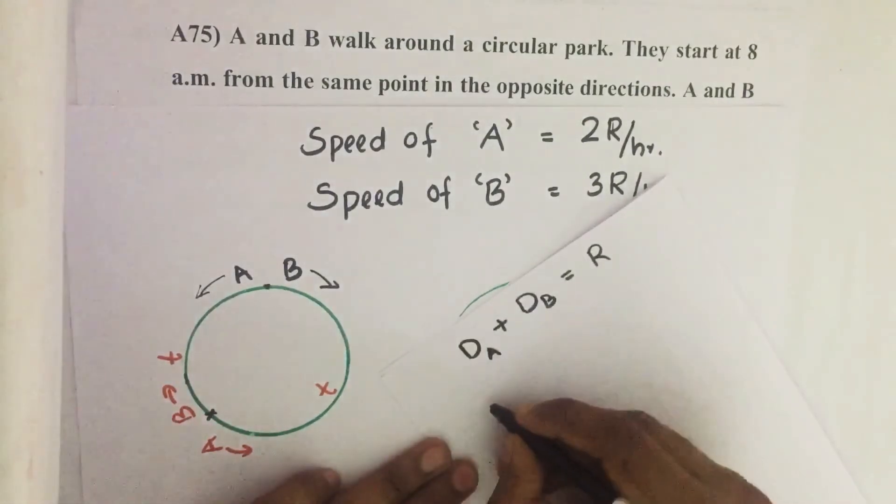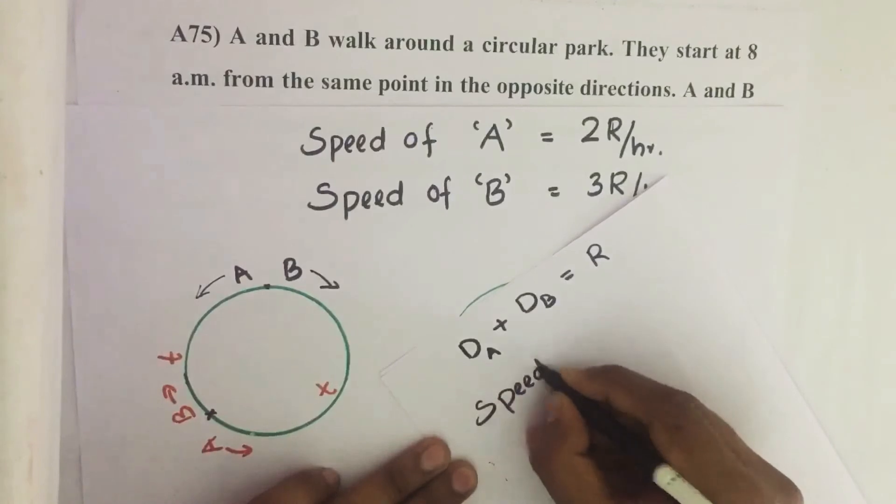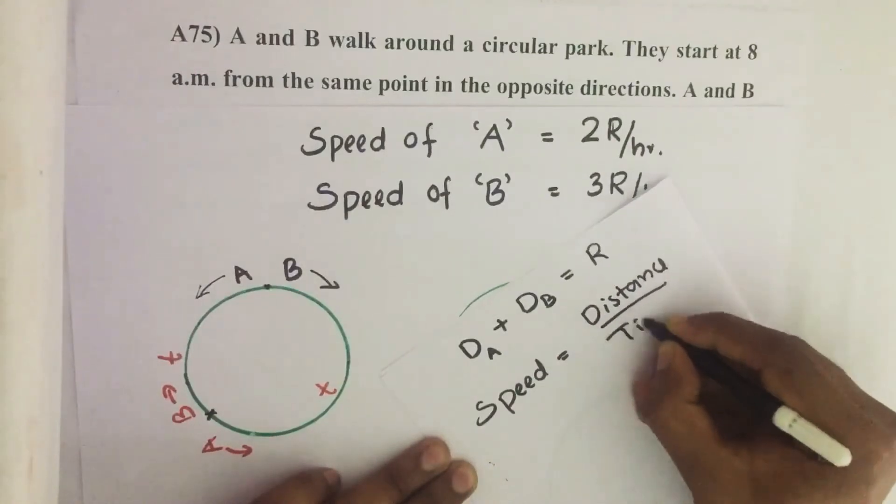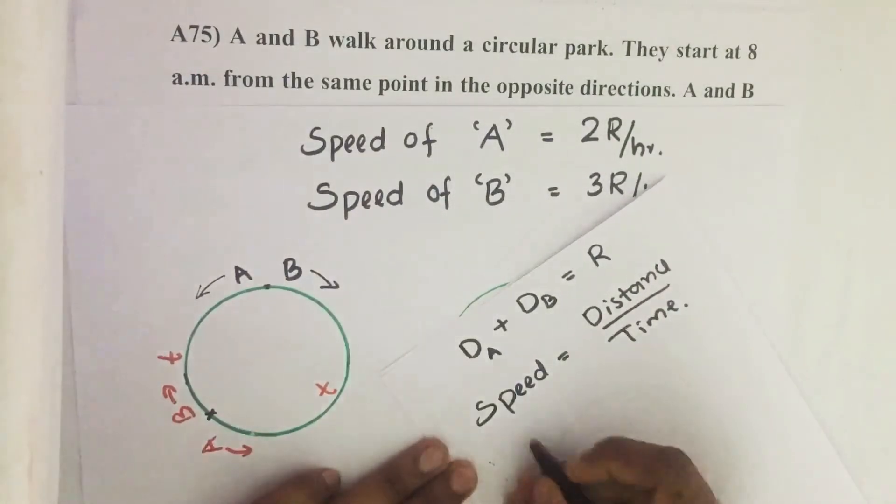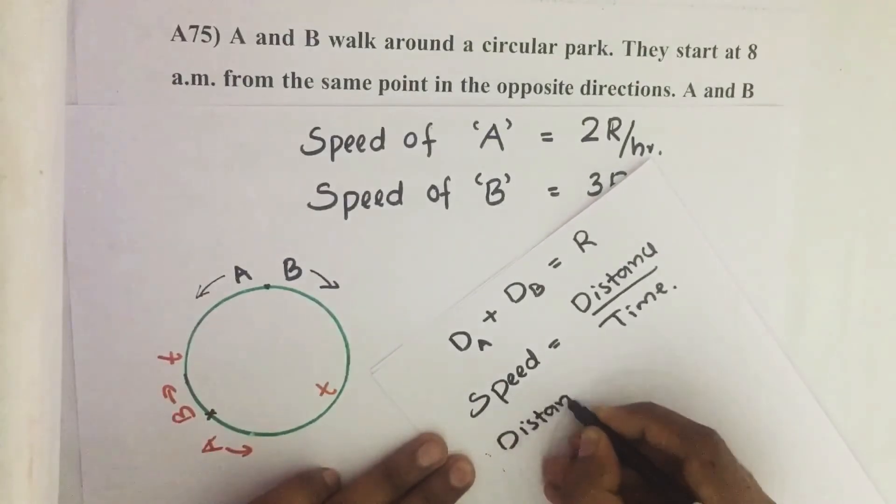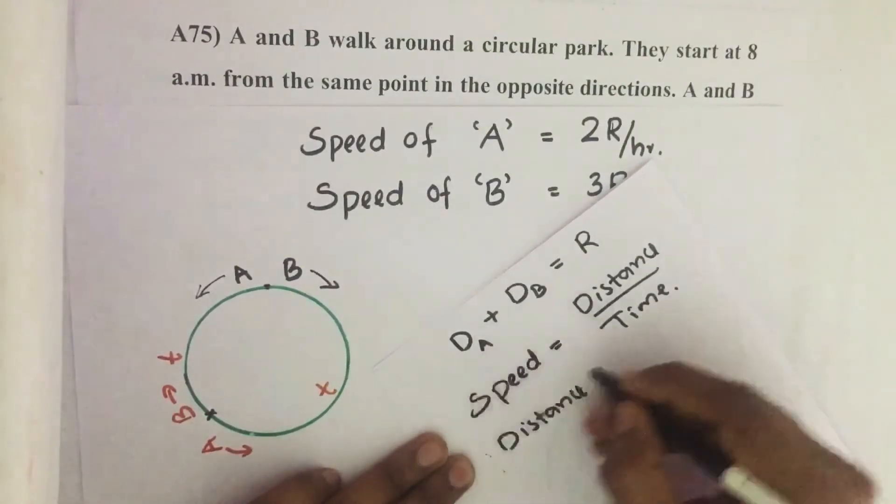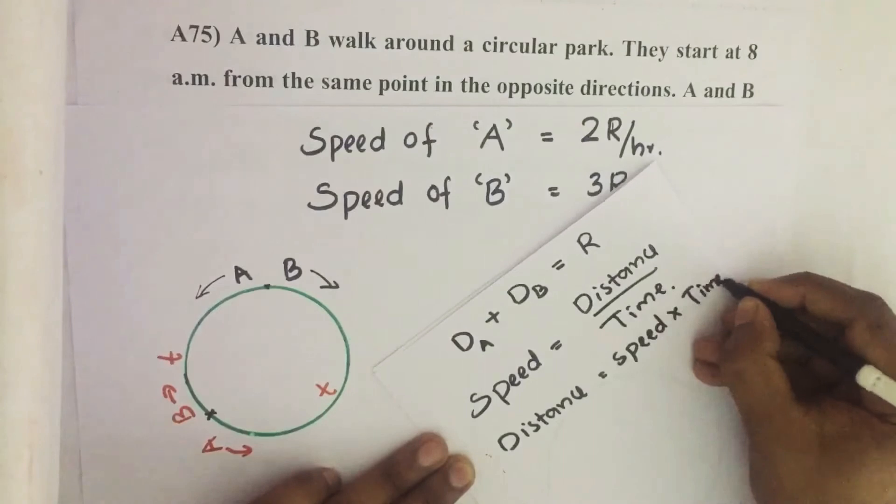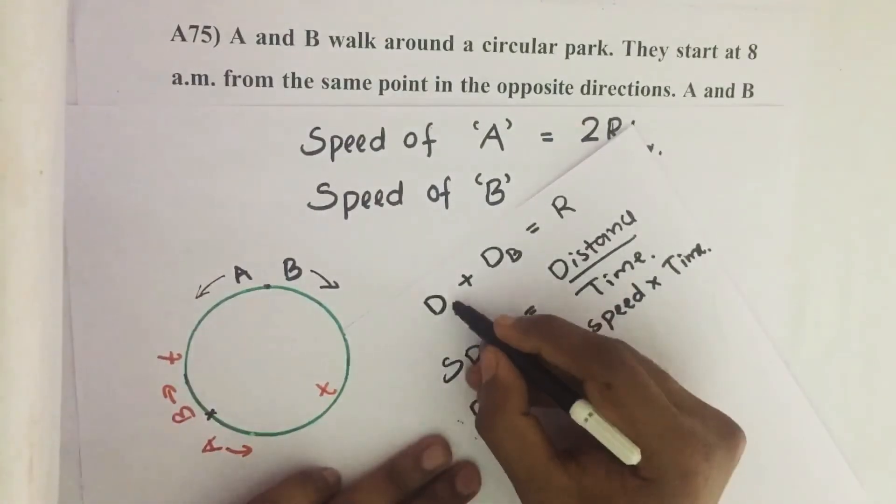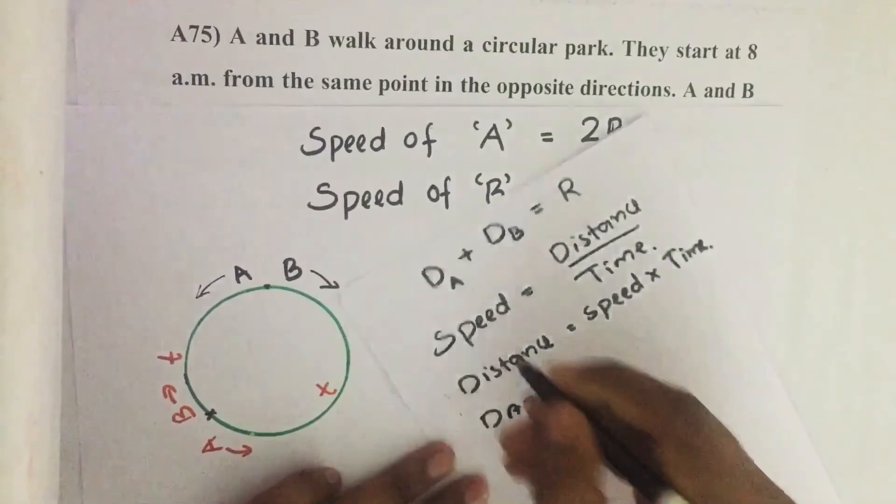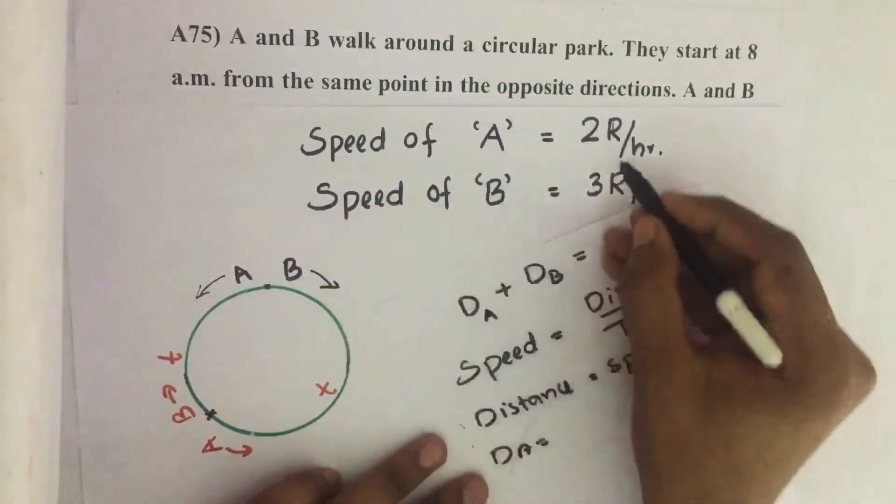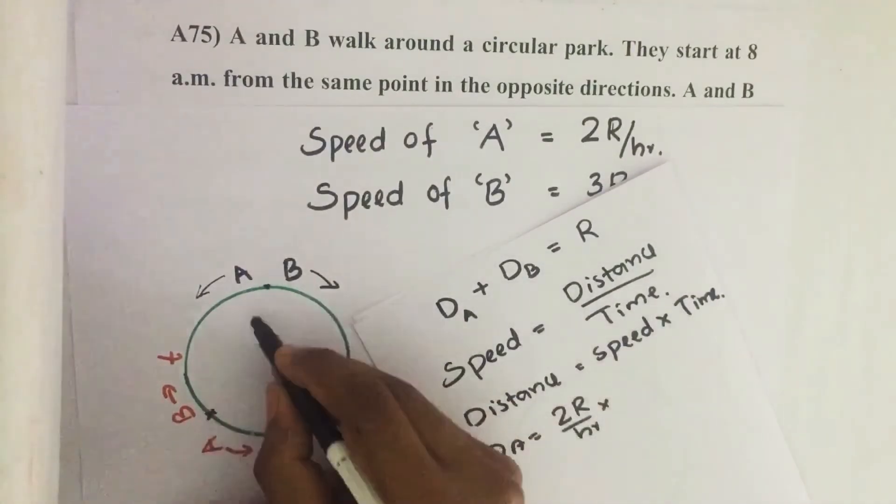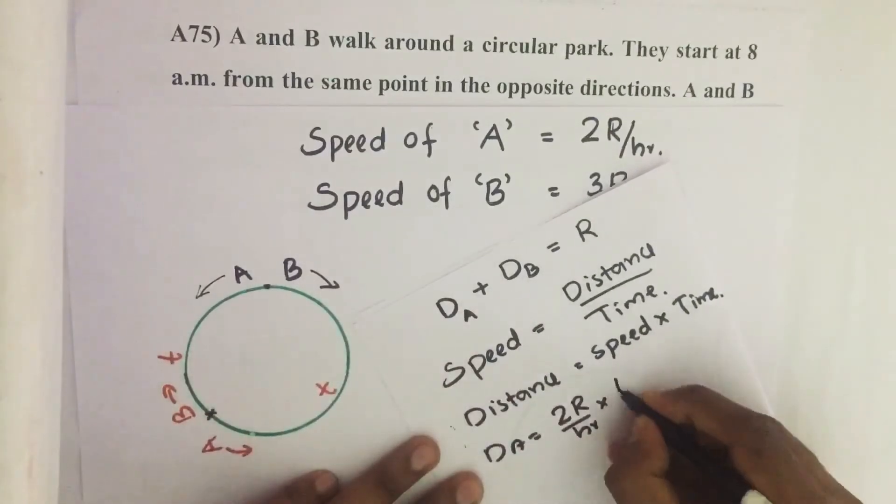We know speed equals distance by time. Then distance equals speed into time. So we can write DA as DA equals speed of A equals 2R per hour into time taken for travelling here to here is T.